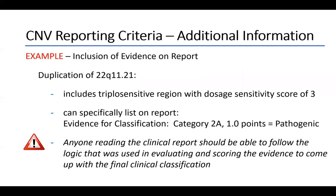Here's an example of how it's useful to include evidence on the report. For a duplication of 22Q11.21, the region includes a gene shown to be triplosensitive with a dosage sensitivity score of three through the ClinGen dosage sensitivity evaluation process. That information can specifically be listed on the report as evidence for classification — as category 2A, assigned one point, meaning pathogenic. Anyone reading the clinical report can then follow the logic used by the interpreter in evaluating the score and evidence that led to that final classification.